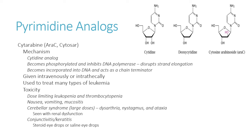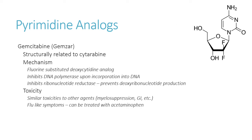Gemcitabine is structurally related to cytarabine. Notice the fluorine atoms in the nucleotide structure — DNA polymerase doesn't know what to do with that, so it also works as a chain terminator. If resistance to Ara-C develops, switching to gemcitabine may work better depending on the case. Very similar toxicity profile applies since it does essentially the same thing. Unique to gemcitabine are flu-like symptoms: myalgias and low-grade fever — treatable with over-the-counter Tylenol.